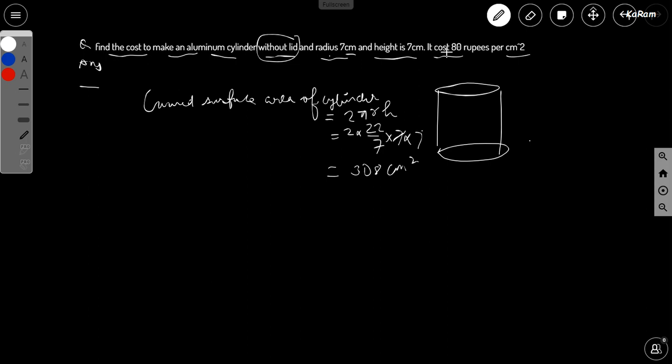And the question says that 80 rupees per centimeter square. So the cost will be, the cost to make such cylinder without lid will be 308...